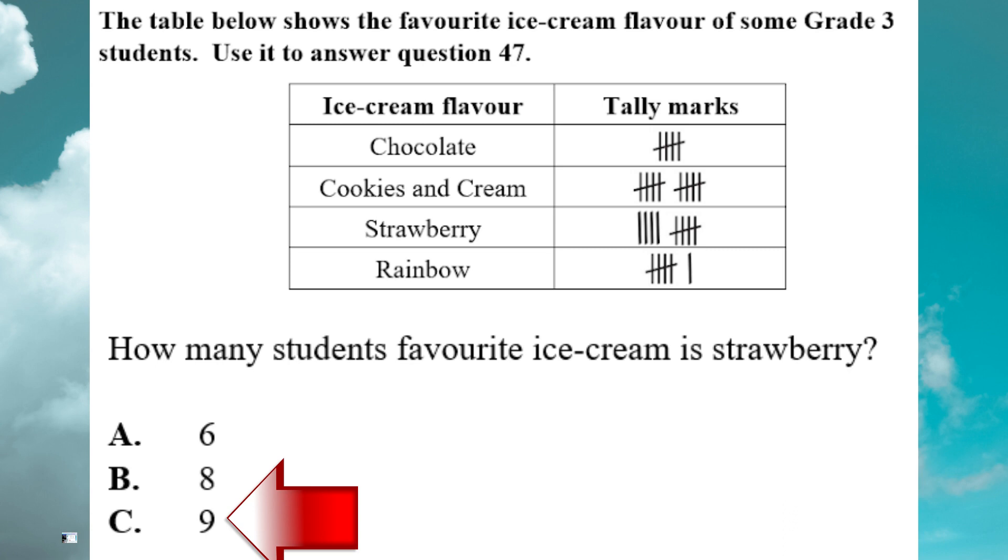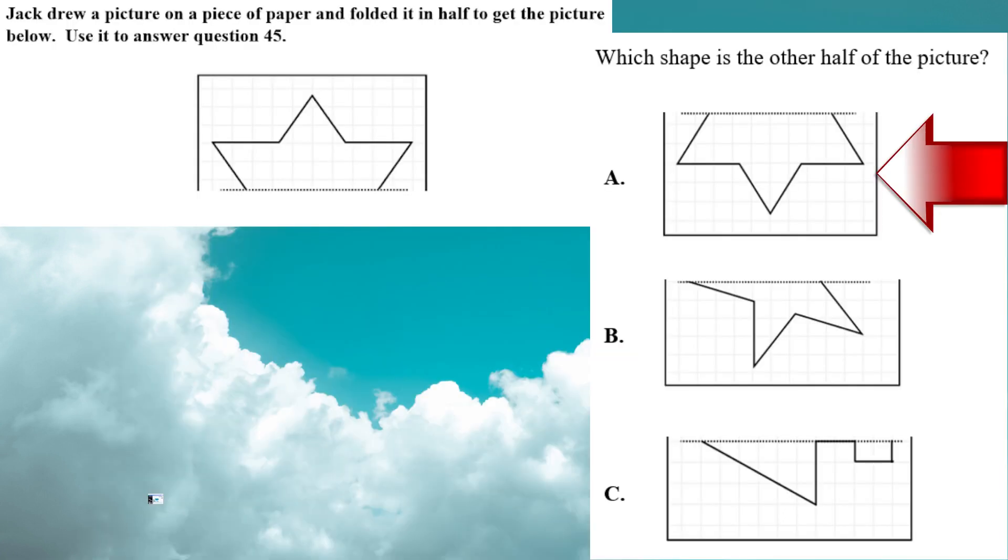Next question. Jack drew a picture on a piece of paper and folded it in half to get the picture below. Use it to answer question 45. Which shape is the other half of the picture? So if you look at what Jack drew, you'll see that this star has three points. It looks like half of a star. And you have three points there. So that is a reference point for you to tell that C cannot be the answer because you see there's a flat section there. And B cannot be the answer because you only see two points. So the other half of what Jack drew has to be A.